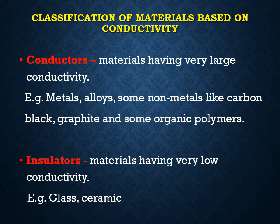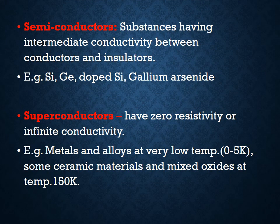Classification of materials based on conductivity: based on conductivity, materials are mainly classified into three types — conductors, insulators, and semiconductors. Conductors are materials having very large conductivity. Metals, alloys, some non-metals like carbon black, graphite, and some organic polymers are examples of conductors. Insulators are materials having very low conductivity. Examples include glass and ceramic. Semiconductors are substances having intermediate conductivity between conductors and insulators.